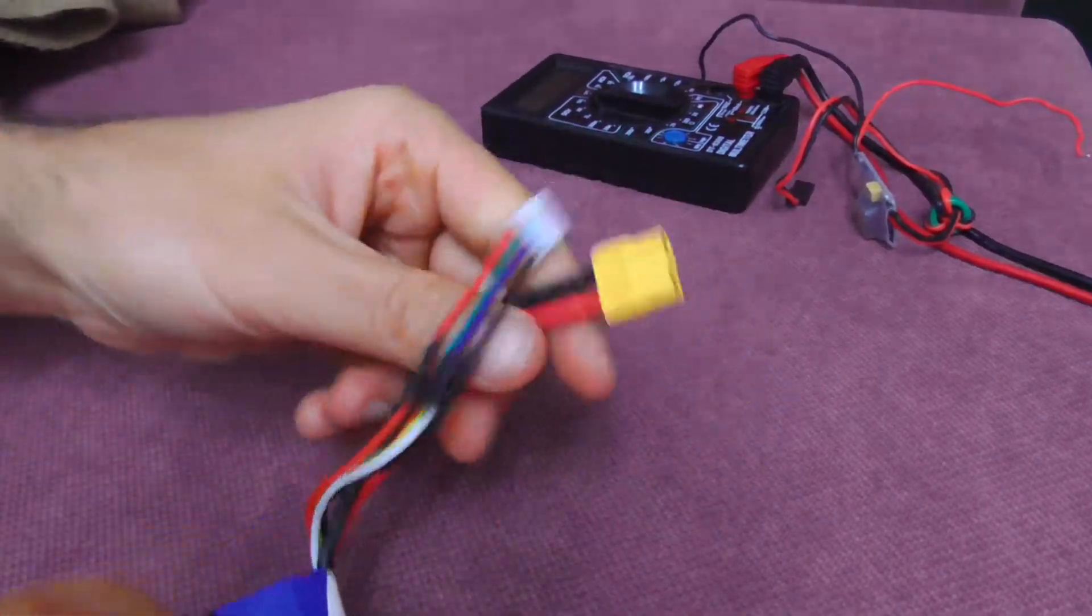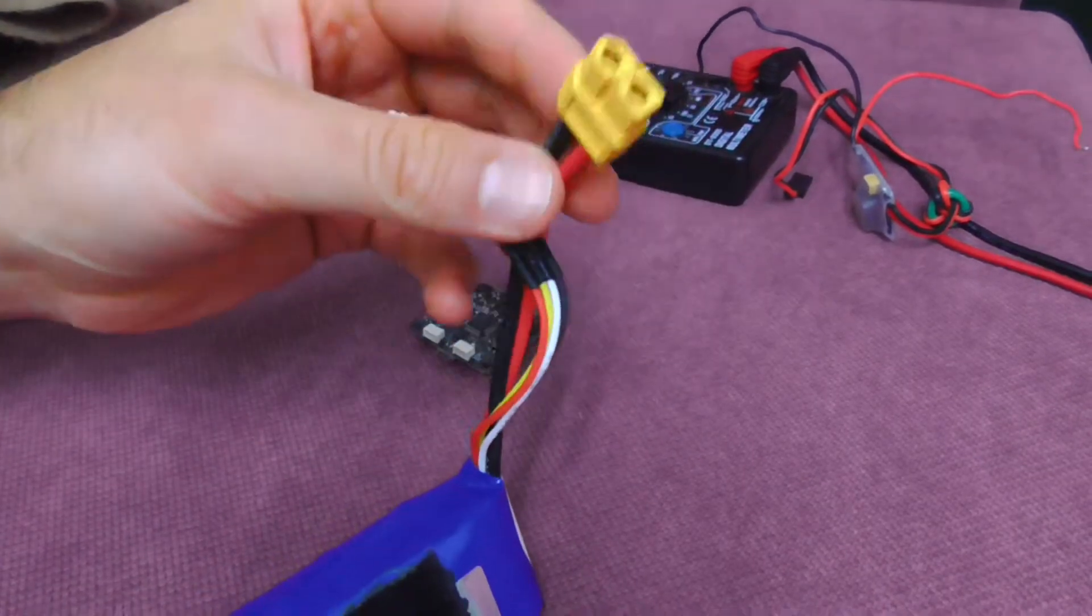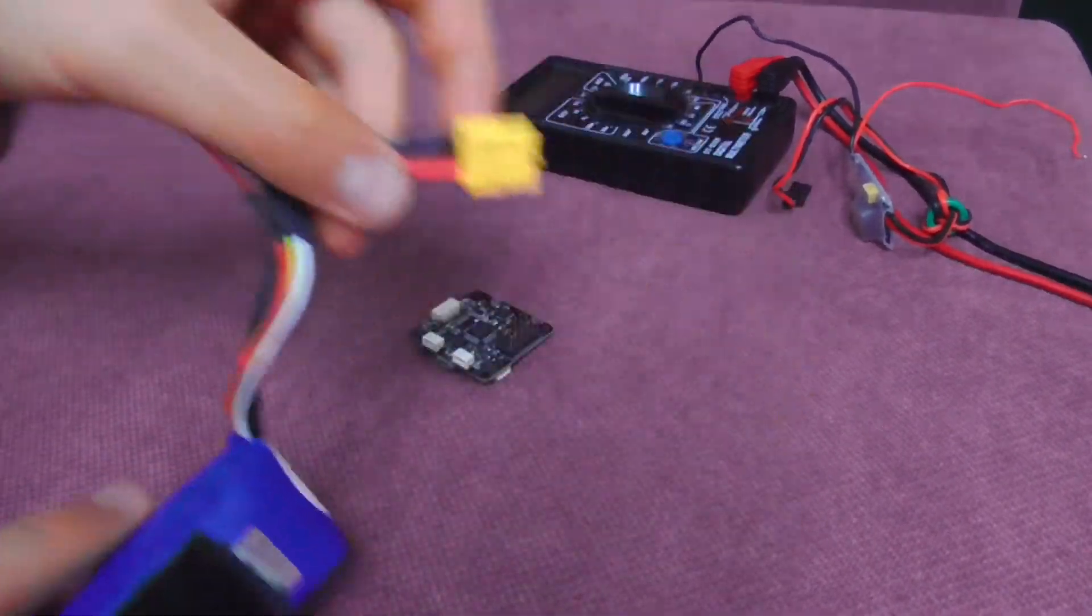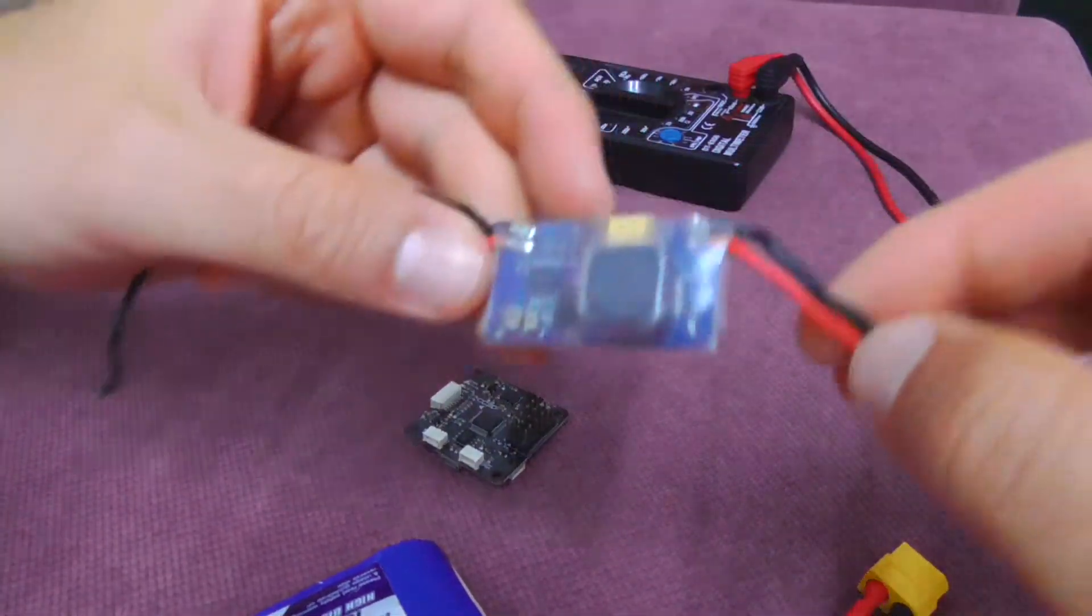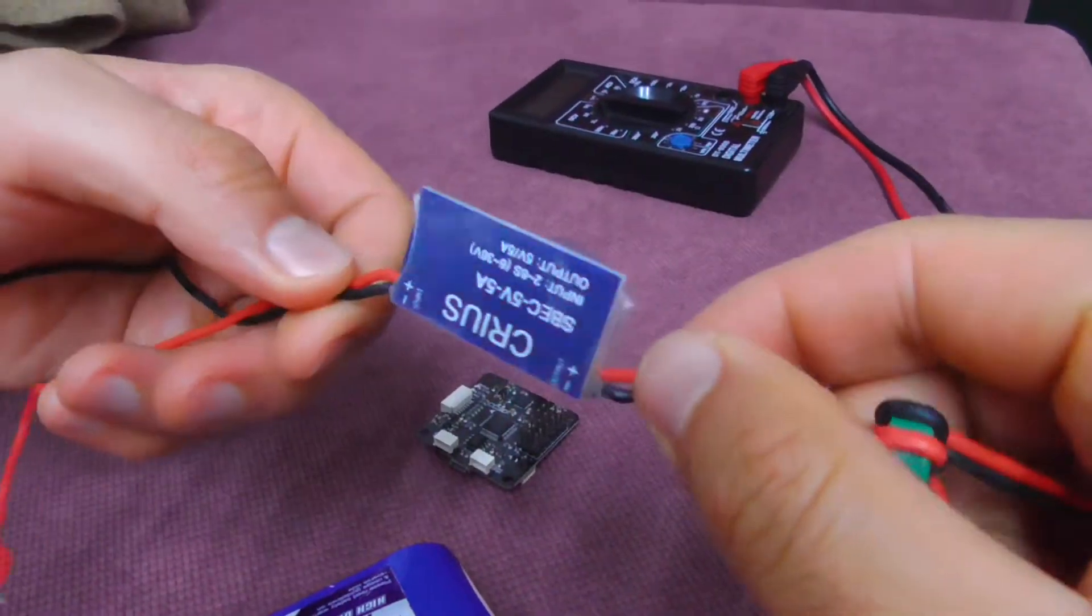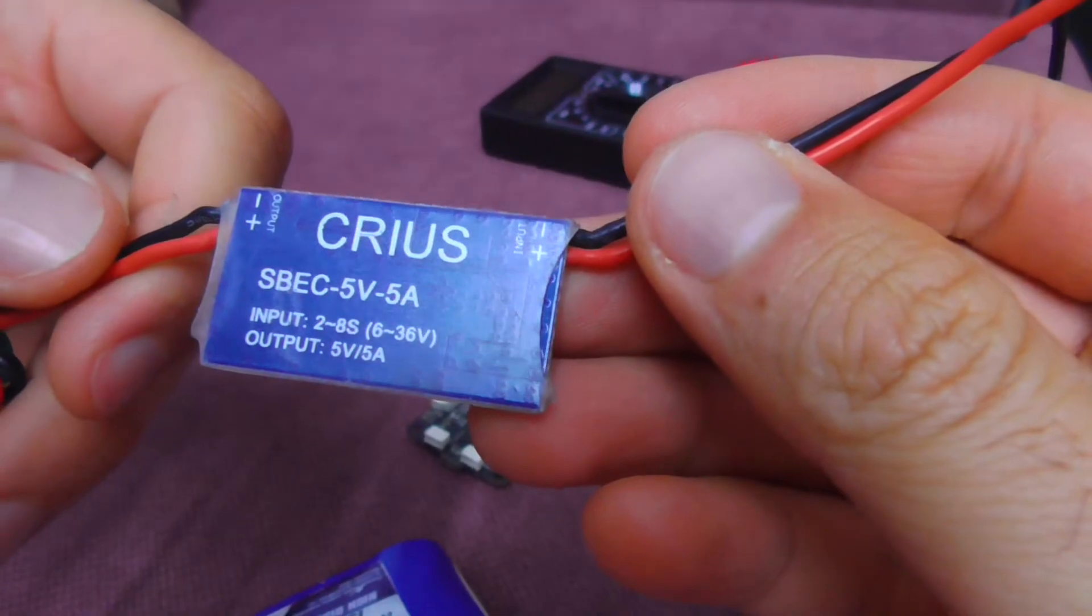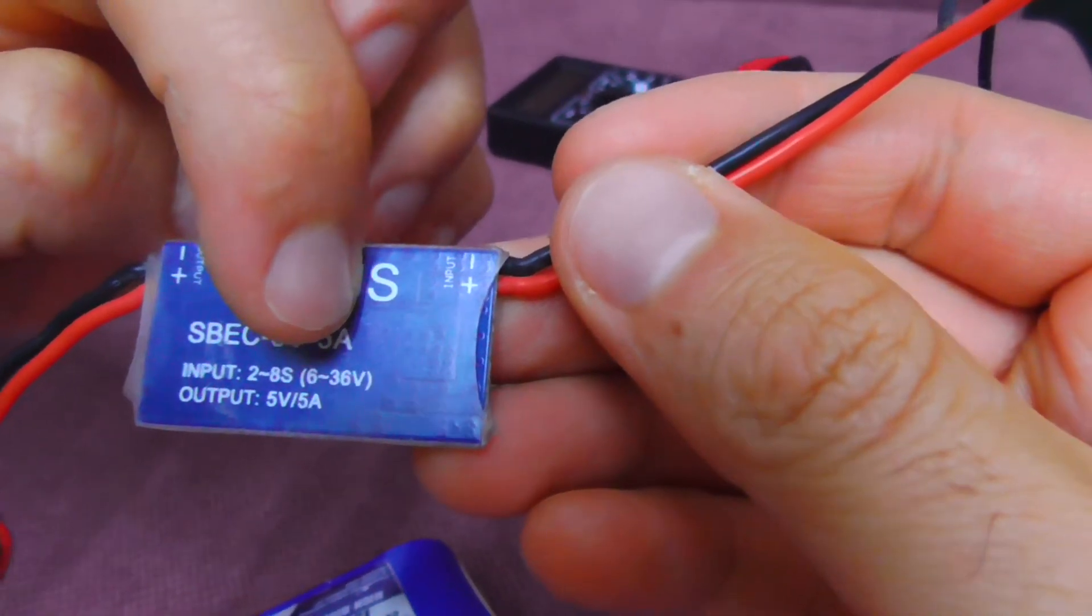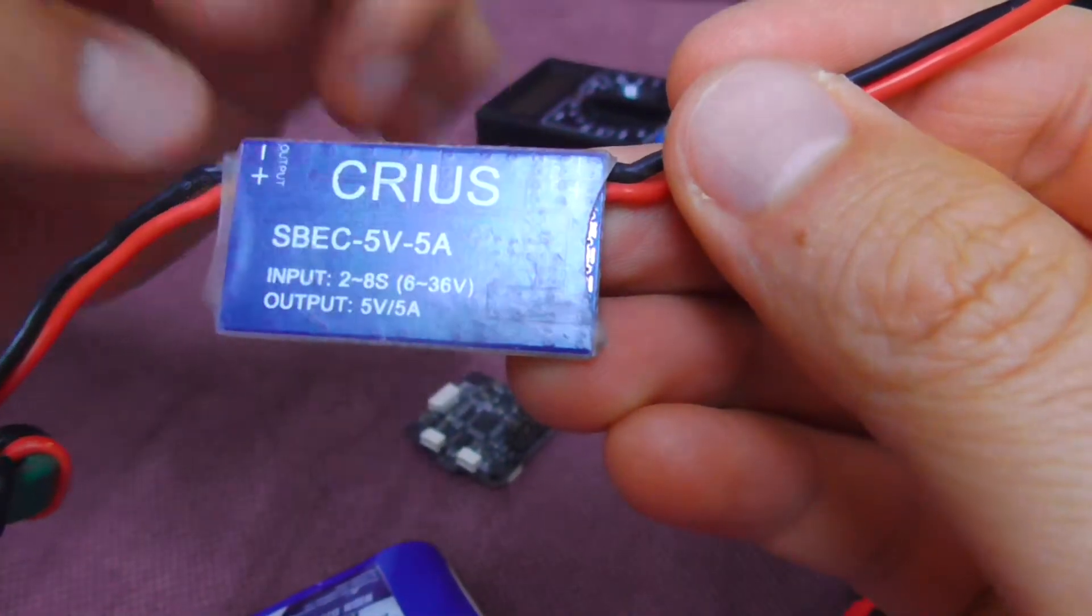And you could use that one also. In this case this gives 11.1 volts, so 3 cells, not directly plugged in there because that will fry it or something like that. But using an S-back, which is like a transformer, it reduces the voltage. You can use S-input between 6 and 36 volts and it will output 5 volts DC.